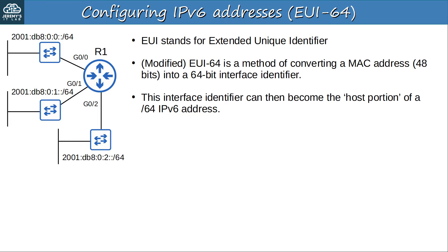An IPv6 address is 128 bits, so slash-64 means 64 bits are the network portion, and 64 bits are the host portion of the address. Let's walk through how to convert the MAC address to the EUI-64 interface identifier. When you actually configure this on the router this will be done automatically, but you should know how to do it.